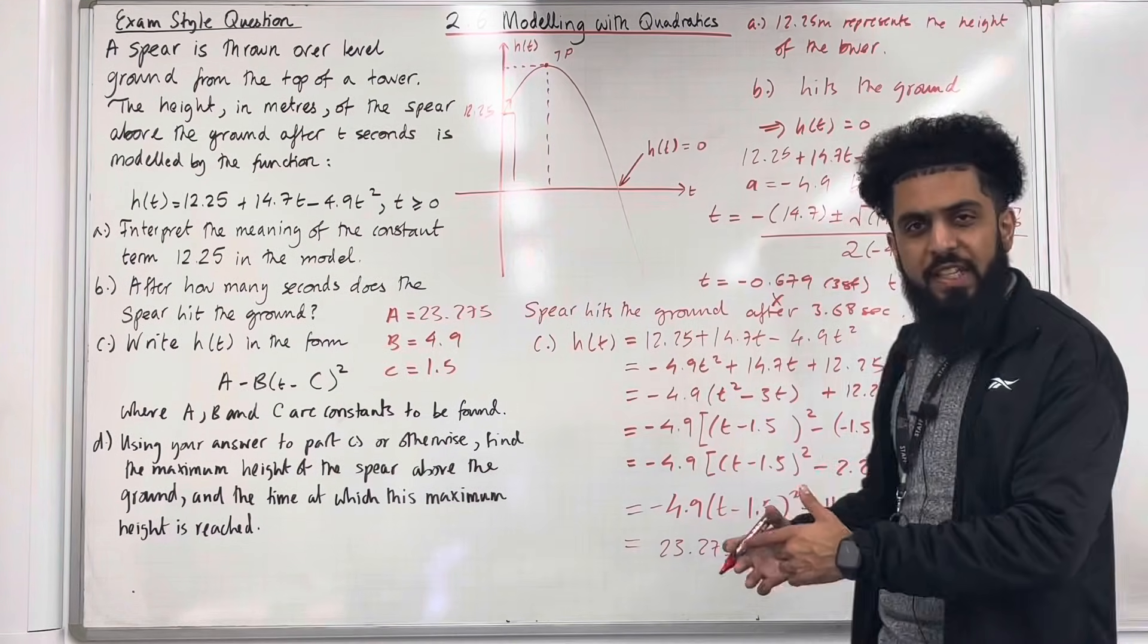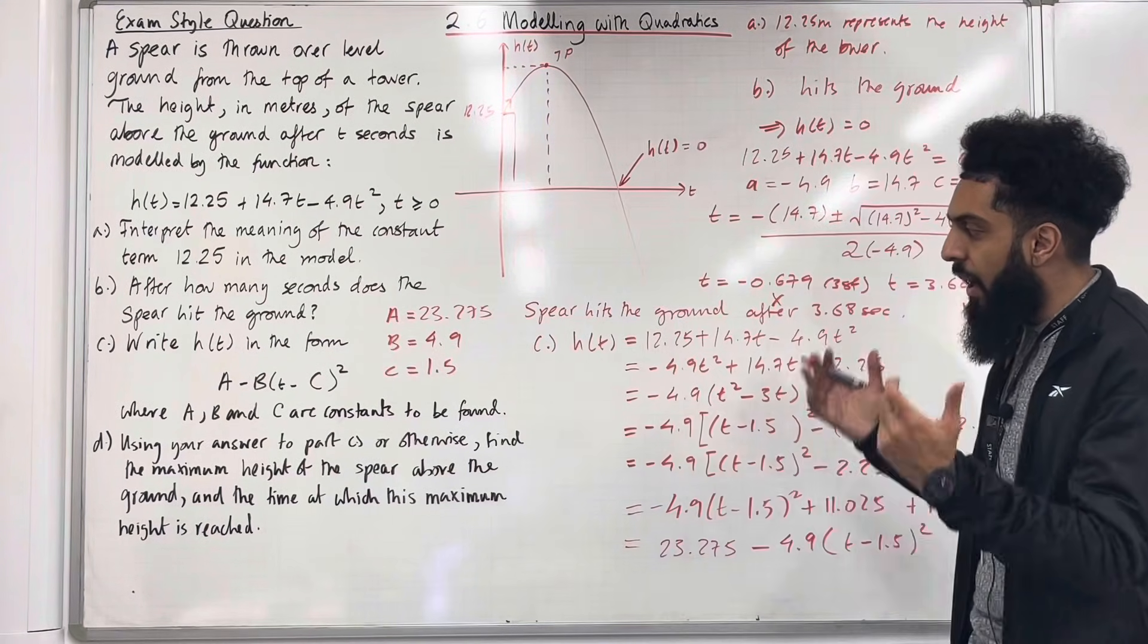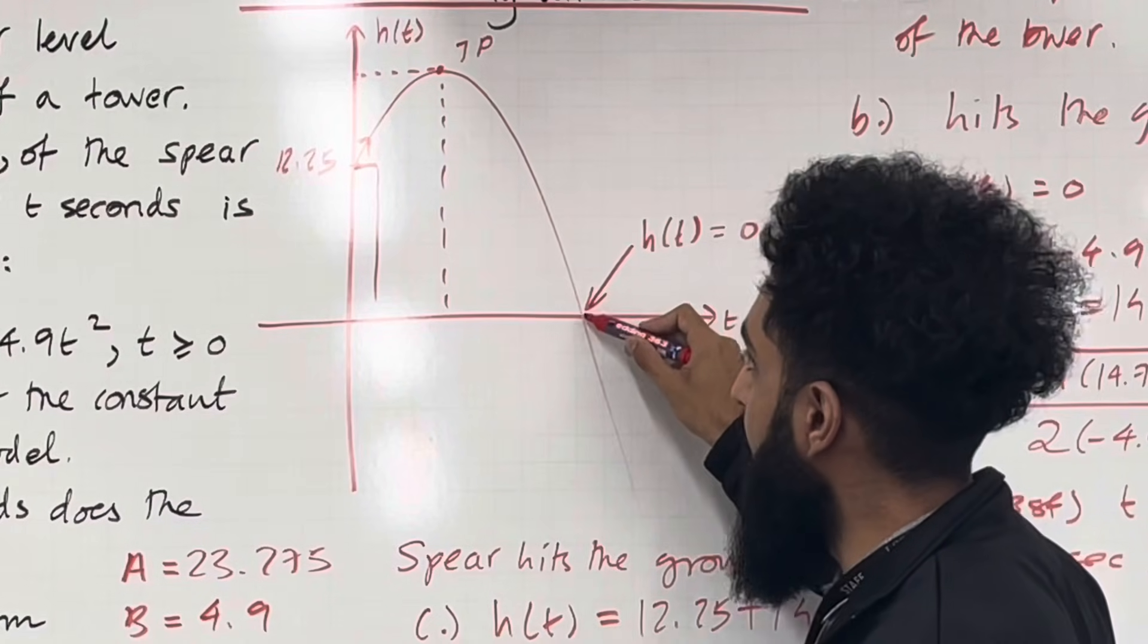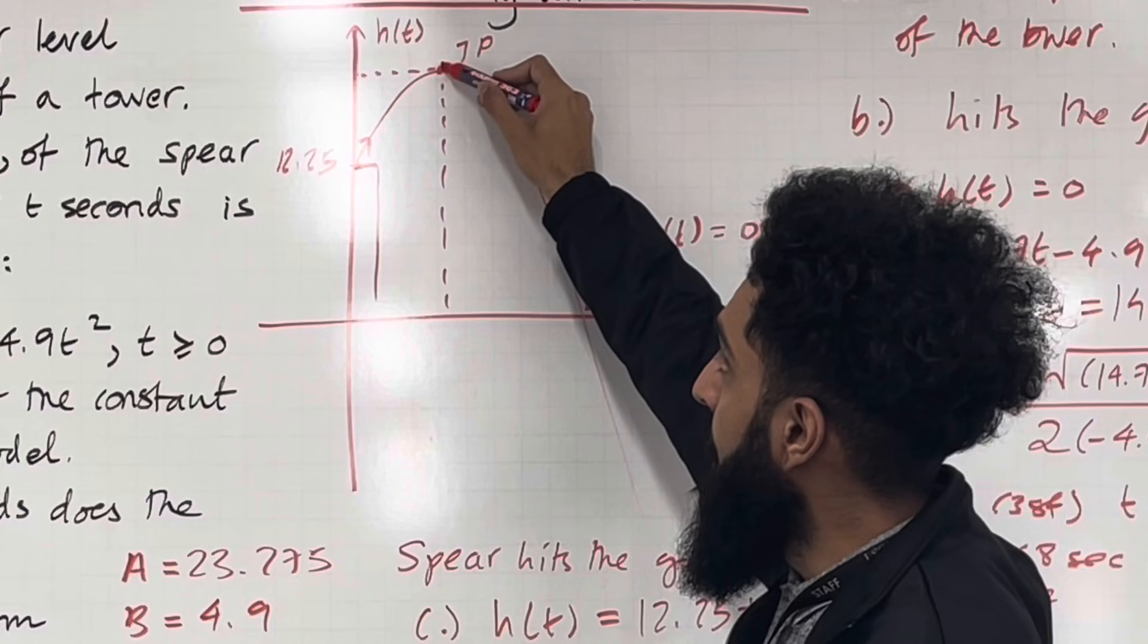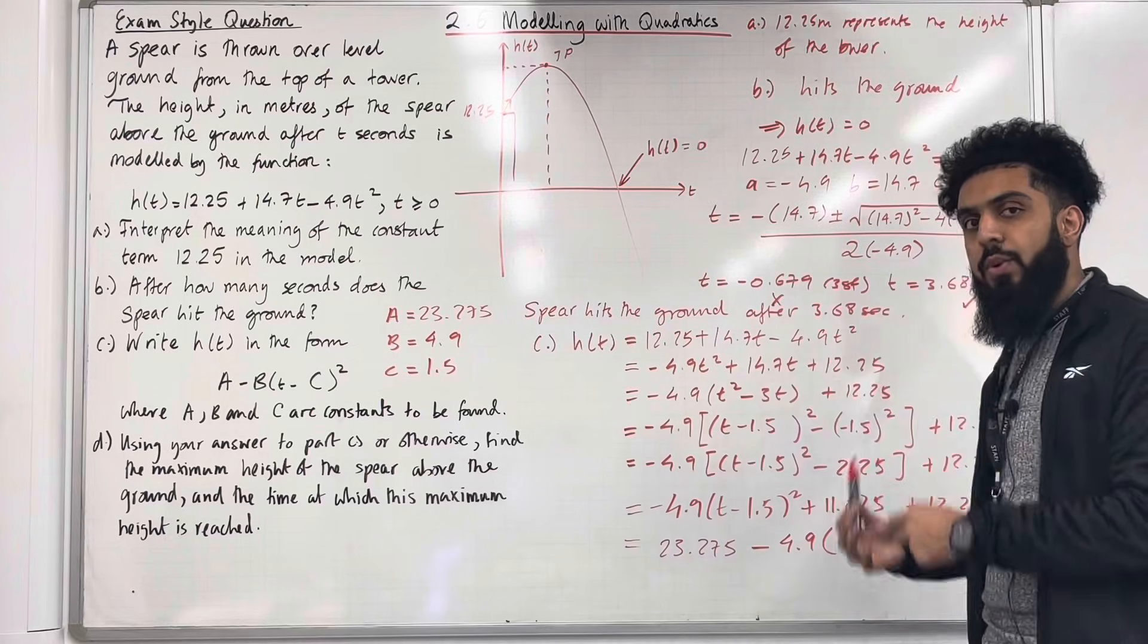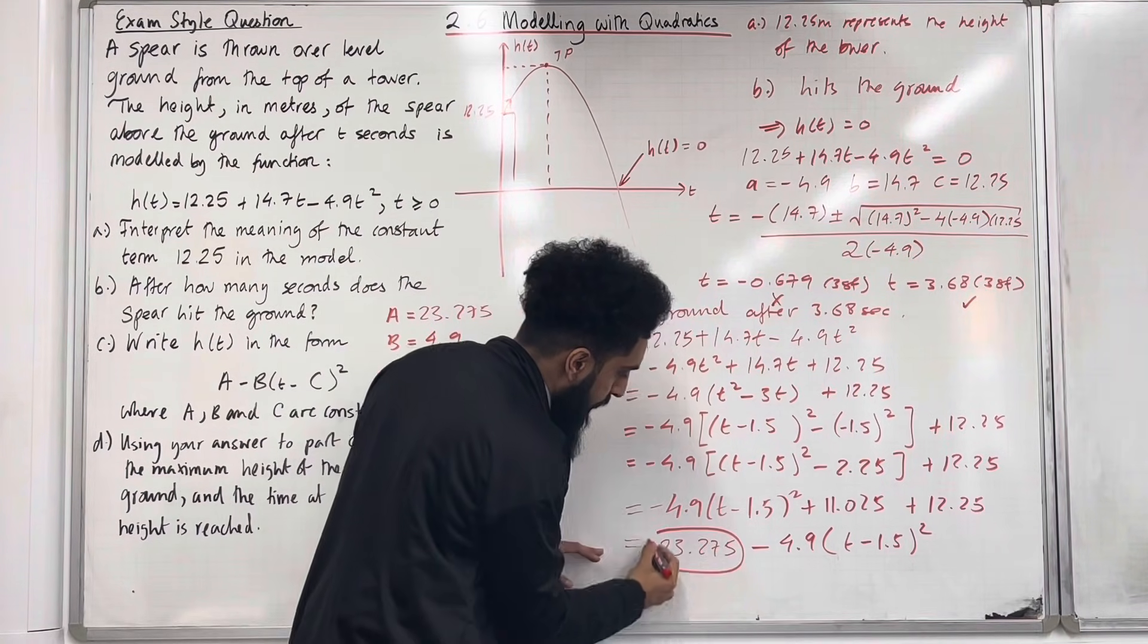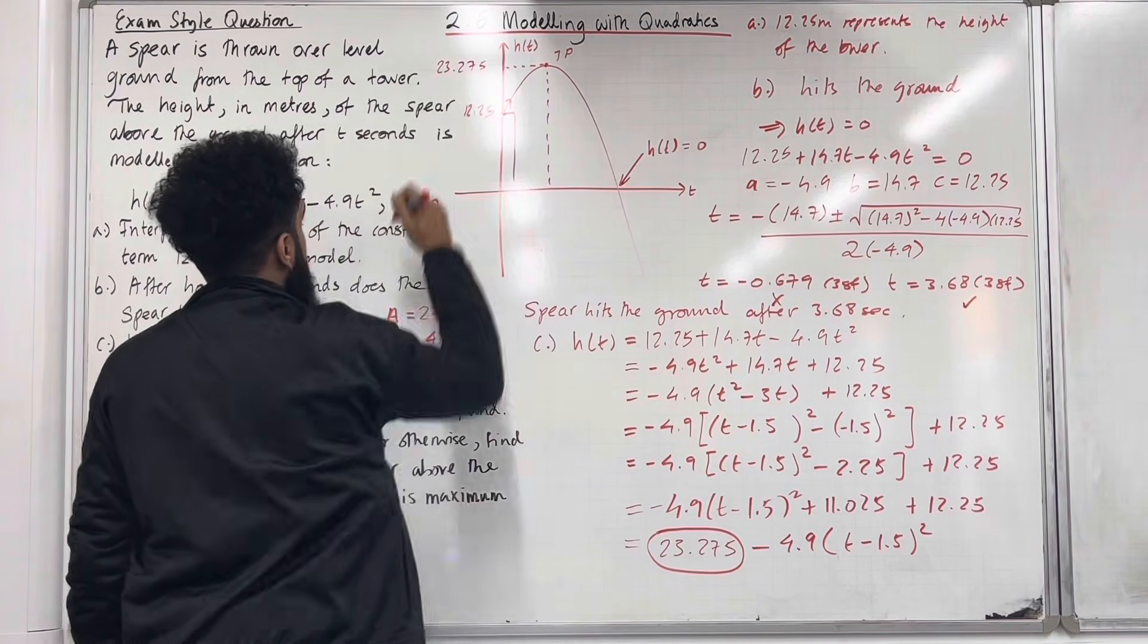Now part D. Using your answer to part C or otherwise find the maximum height of the spear above the ground and the time at which this maximum height is reached. So here's my spear. It travels in such a way and then it hits the ground over here. Now the spear will reach a maximum height at this position. We want to work out this maximum height. Well the way we work out the maximum height is to go back to our complete the square form. In our complete the square form, the outer number is the maximum height. This one here, 23.275. That is the maximum height. So max height = 23.275 meters.